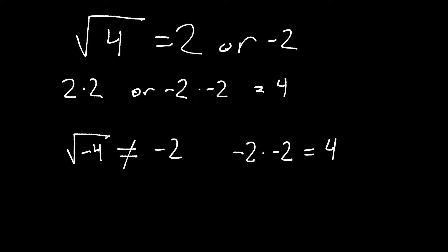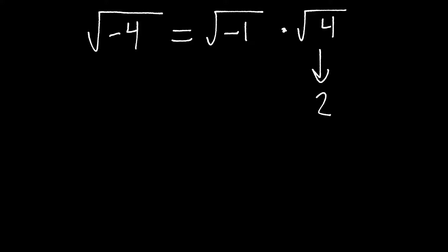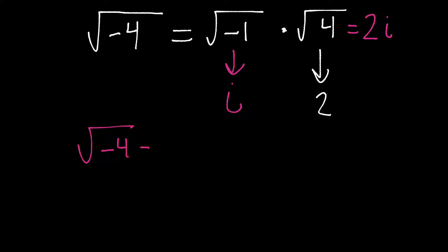This is where imaginary numbers come in. Whenever we have a negative number underneath the radical, we're going to be dealing with imaginary numbers. When we're working with the square root of negative 4, the easiest way to handle this is to break it up into the square root of negative 1 times the square root of 4. The square root of 4 is 2, and the square root of negative 1 is i — the letter i for imaginary. So the square root of negative 4 equals 2i. i is not a variable; it has a very specific value: the square root of negative 1. Since that technically doesn't exist, we call it imaginary.